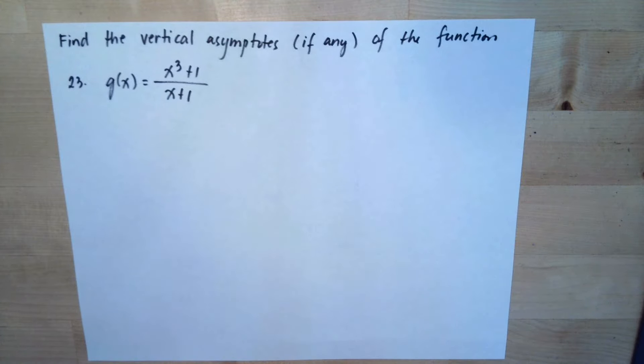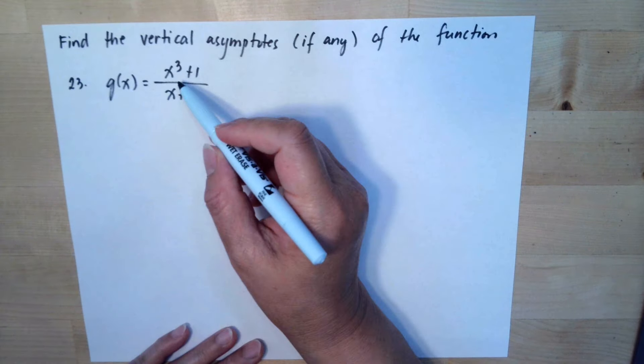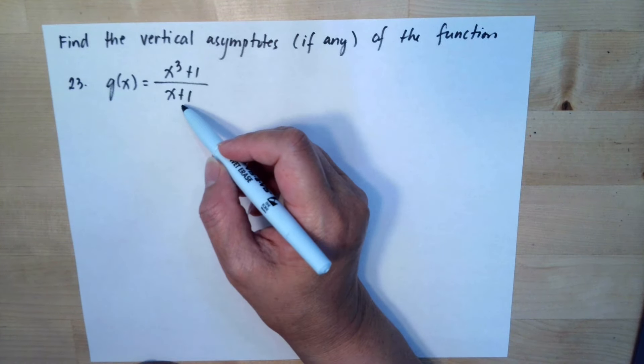Find a vertical asymptote with any of the functions. So we have g(x) is equal to x to the third plus 1 over x plus 1.